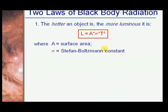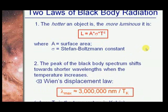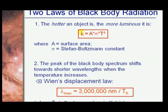There is a relation that connects luminosity to temperature. To get the temperature, you need two parameters: the luminosity of the star and the surface area. From those, you can derive the temperature using the Stefan-Boltzmann constant.